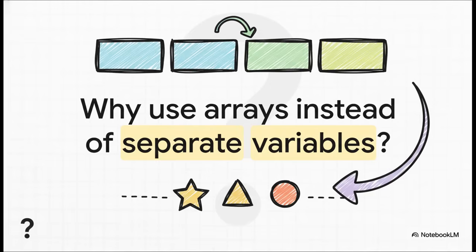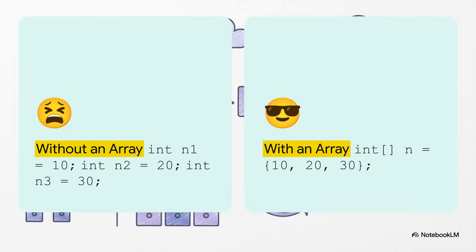At this point, you might be thinking: okay, I get it — but why all this trouble? Why can't I just make a bunch of separate variables for my numbers? That's a totally fair question. Well, this comparison says it all. Look at the left: three numbers, three lines of code. Now look at the right: one clean, simple line. Now just imagine you had a hundred numbers — the version on the left becomes an absolute mess, while the array on the right stays elegant and simple.